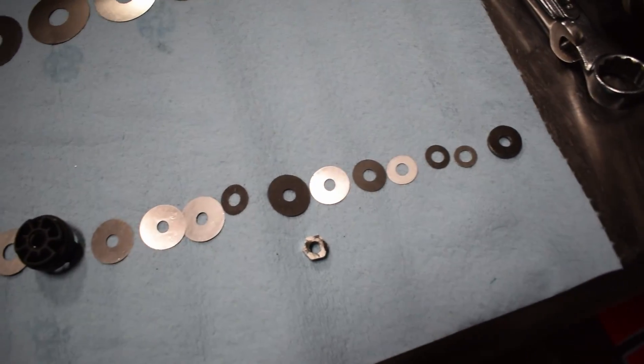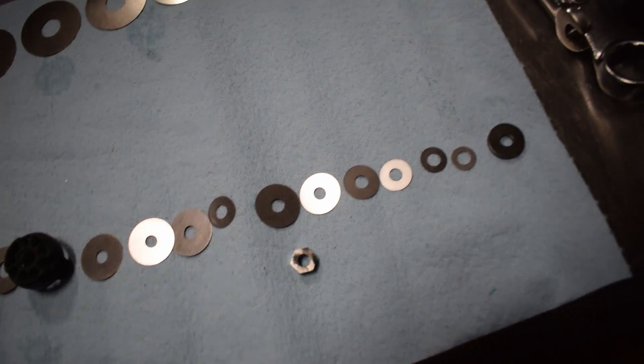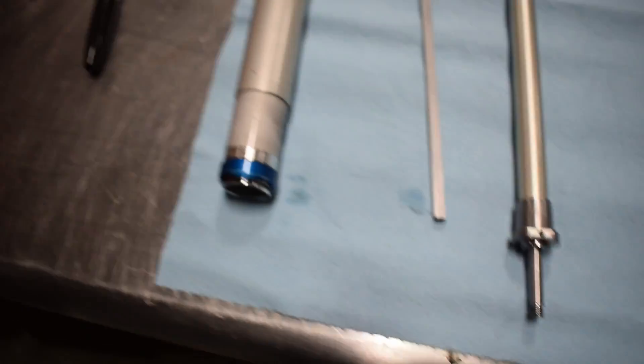Here's a rebound side. More shims you have there, slower your rebound is. Less shims you have there, faster your rebound is. Not rocket science. Again, here's the mid-valve post, and then there's your cartridge.